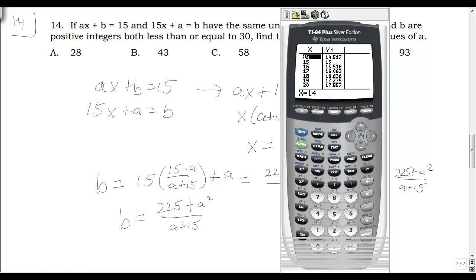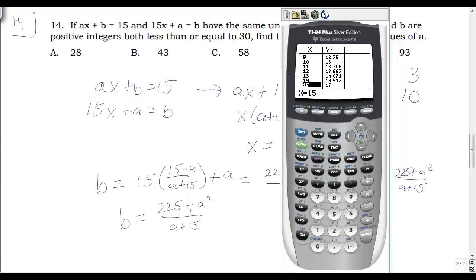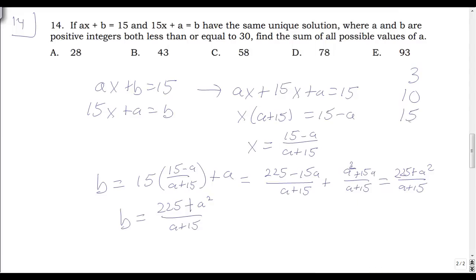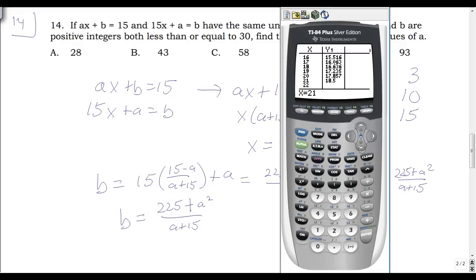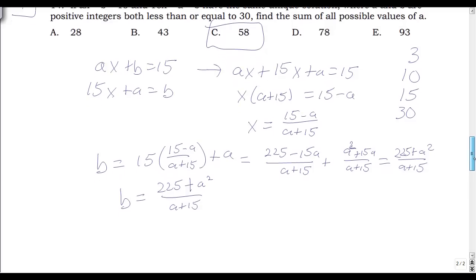Using the table with the correct formula, A equals 3 gives a whole number for B. A equals 5 gives 12.5 — not a whole number. A equals 10 works, A equals 15 works, and A equals 30 also works. Summing: 30 plus 15 plus 10 plus 3 equals 58. The answer is 58.